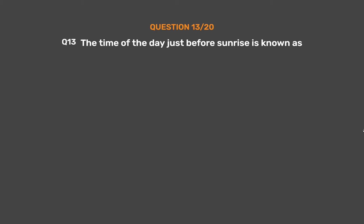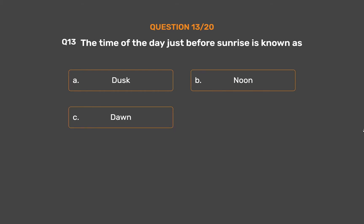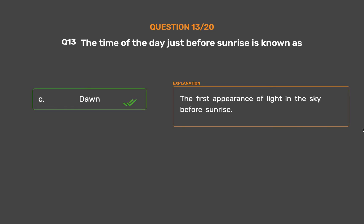Question number 13. The time of the day just before sunrise is known as: Option A: Dusk. Option B: Noon. Option C: Dawn. Option D: Morning. The correct answer is Option C: Dawn. Dawn is the first appearance of light in the sky before sunrise.